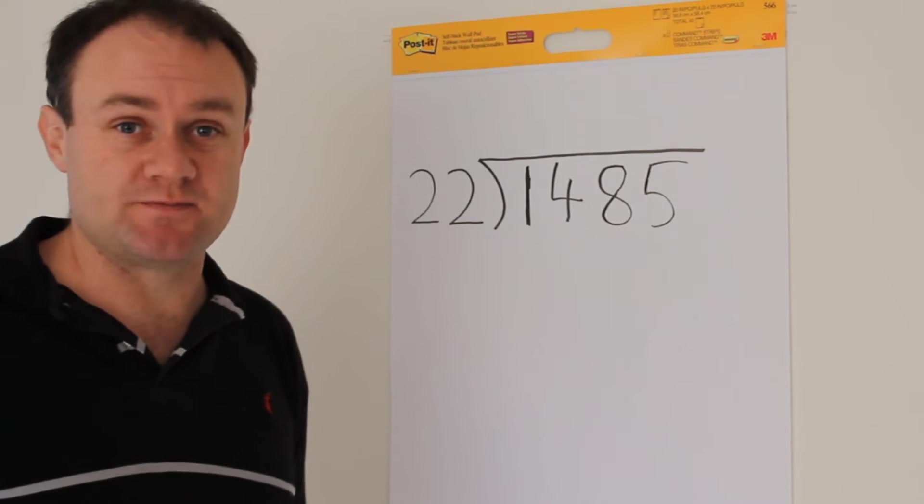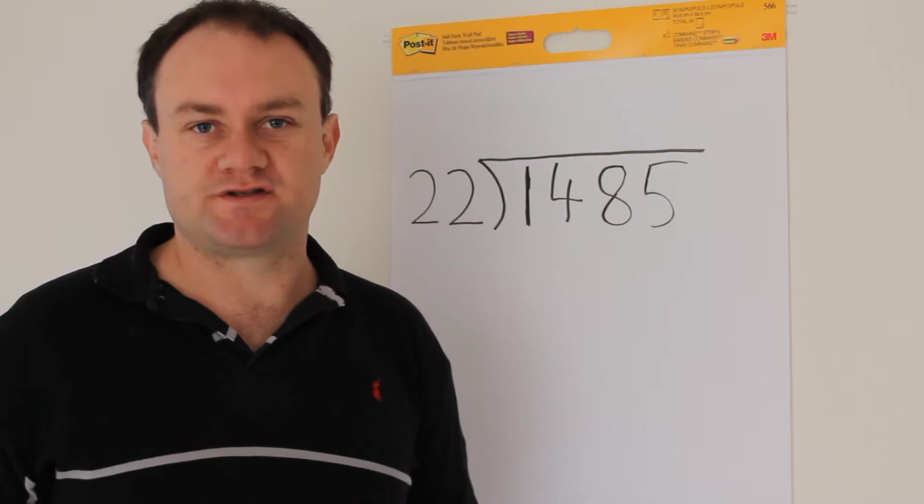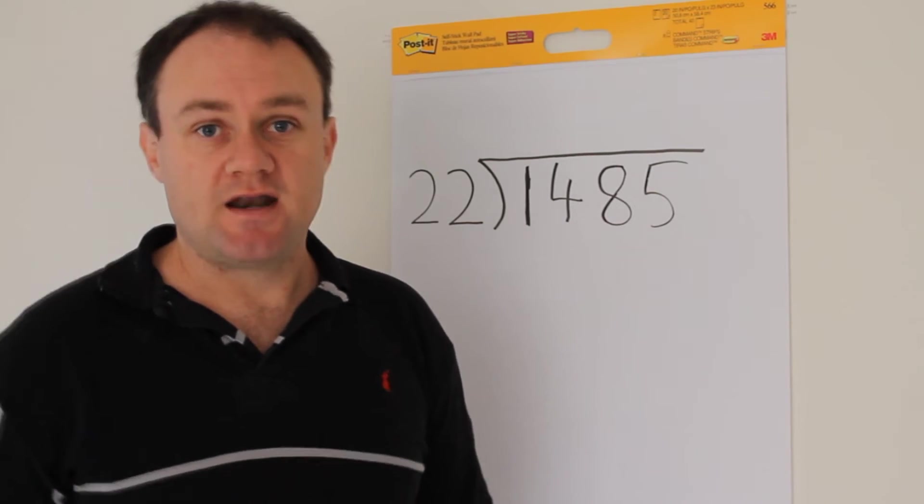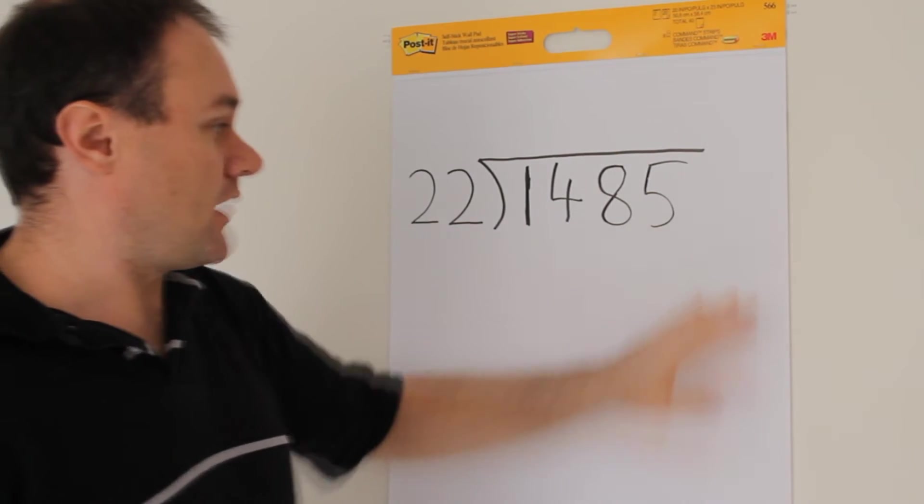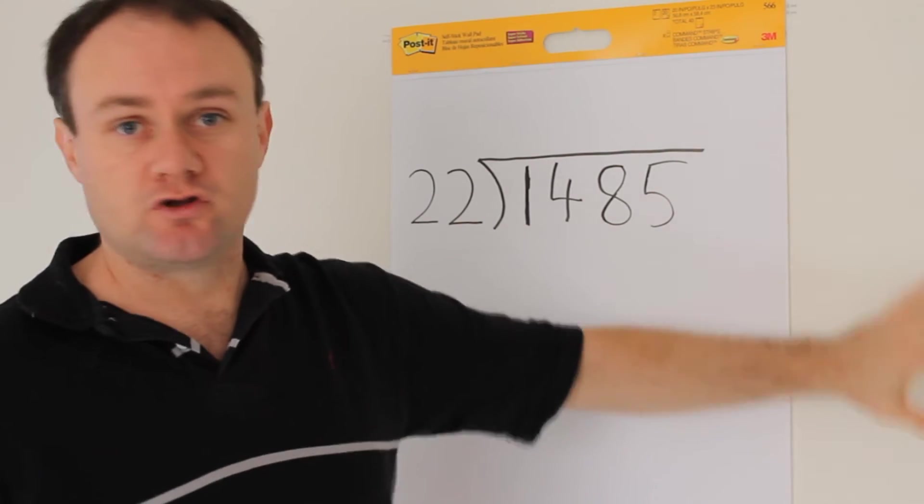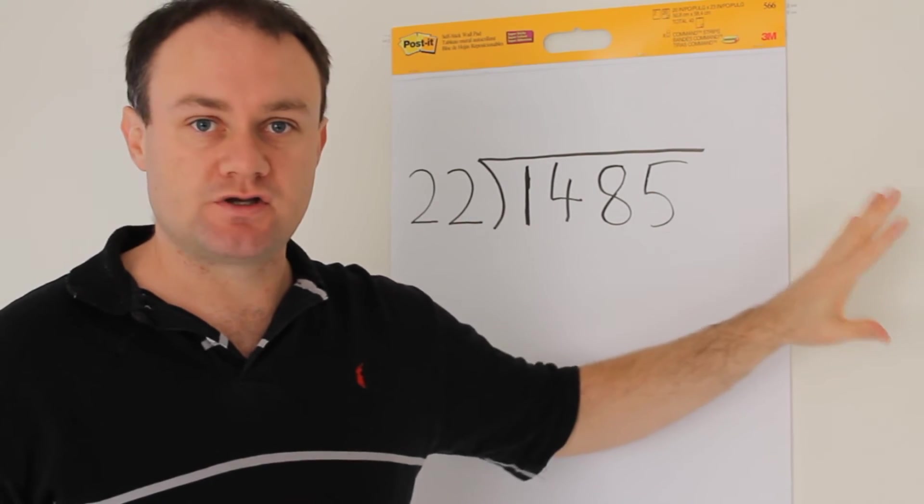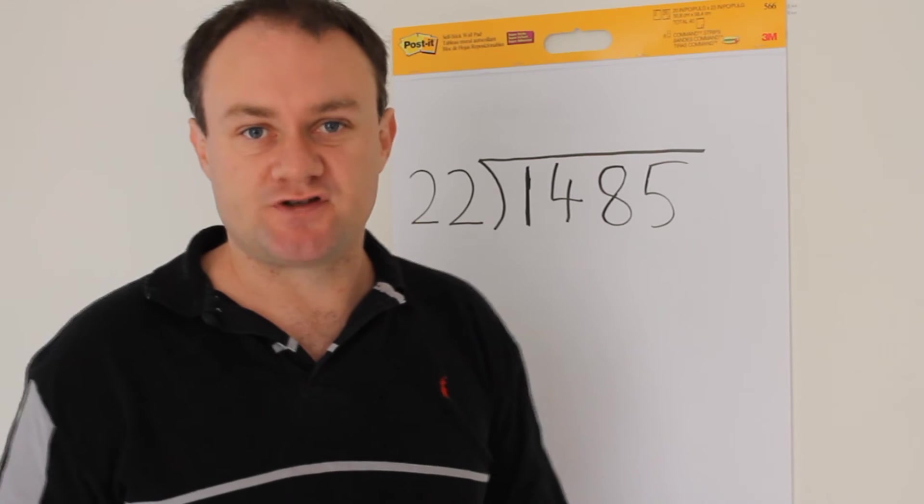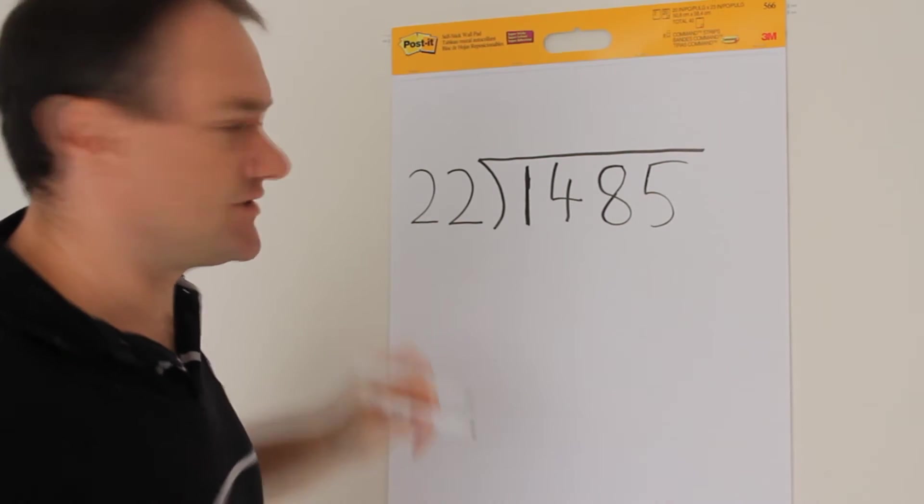So the process I take at this point is to say, I'm pretty sure it's going to be a 6. Now if you weren't sure, you could work on the side and do a little bit of multiplication and check to see if you're right. But this time I'm confident, so I'm going to put the 6 in place.